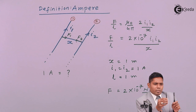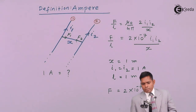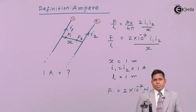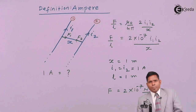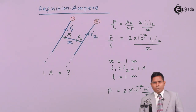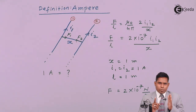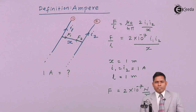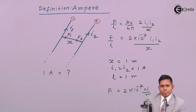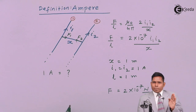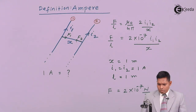That current is called one Ampere. One Ampere is that current which flows equally through both conductors, separated by a distance of one meter, and exerts a force of 2×10⁻⁷ Newton per unit length on each other. If the current is more or less than this, the force will change. Exactly to produce that force of 2×10⁻⁷ Newton per meter, whatever current flows — that current is defined as one Ampere.